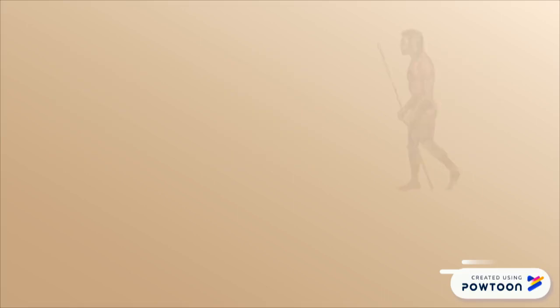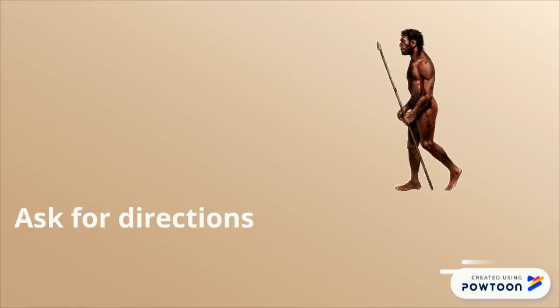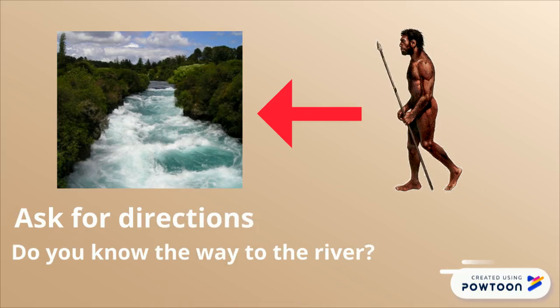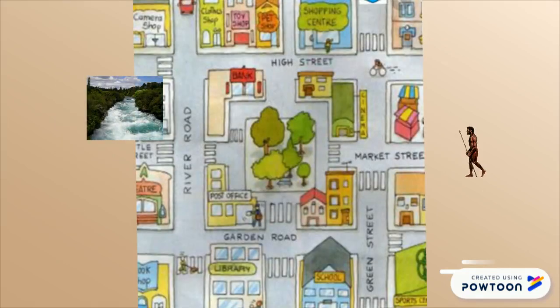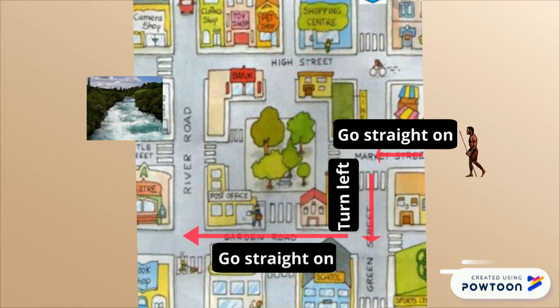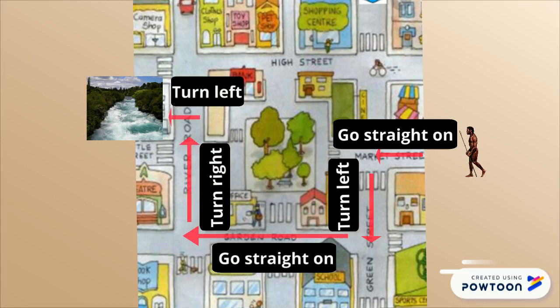So, our man asks for directions. Do you know the way to the river? So, our man needs to go straight on, turn left, go straight on, turn right, and finally turn left to arrive to the river and drink some water.